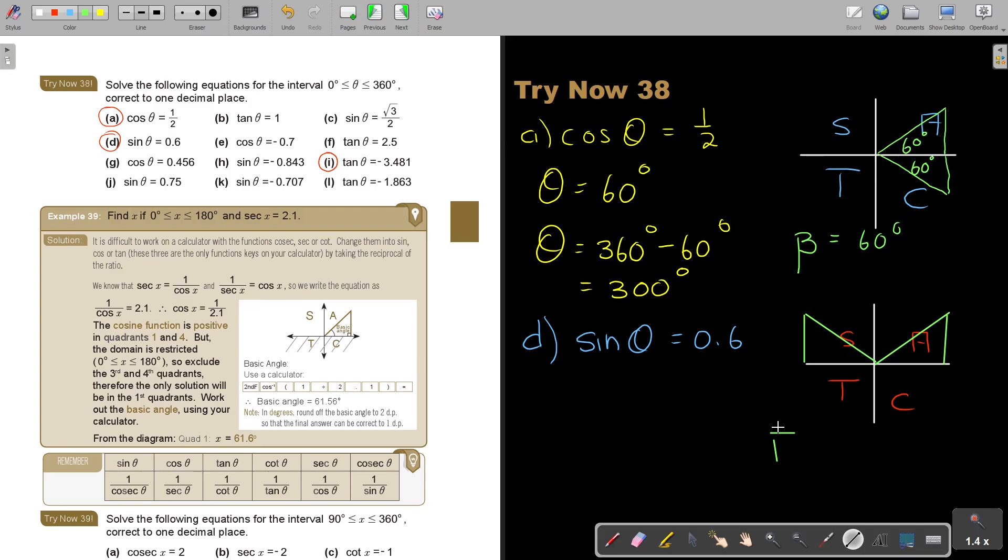Make sure your answer is to one decimal place. So make the basic angle to two decimal places, then your one place will be correct. The basic angle is 36.87 degrees. Don't forget, this is your first answer, this is your second answer.